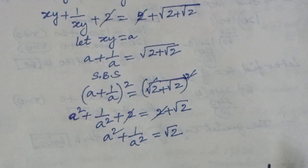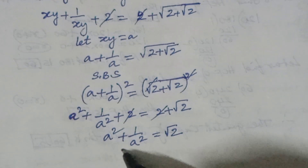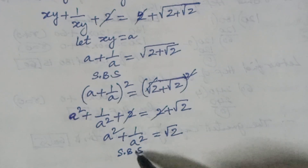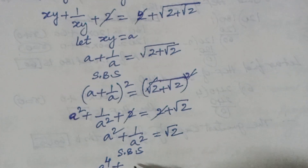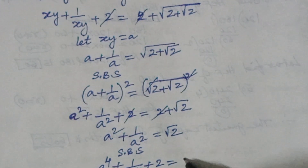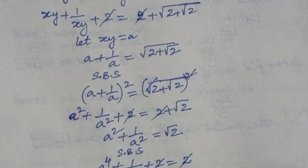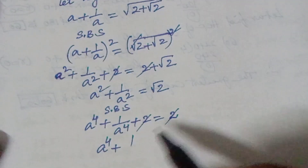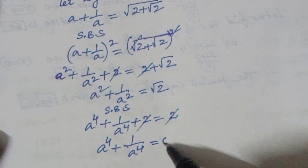Again squaring on both sides: a to the power of 4 plus 1 by a to the power of 4 plus 2 equals 2. The 2s cancel, so a to the power of 4 plus 1 by a to the power of 4 equals 0.